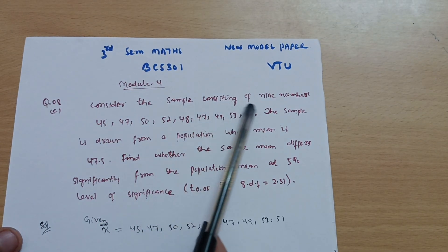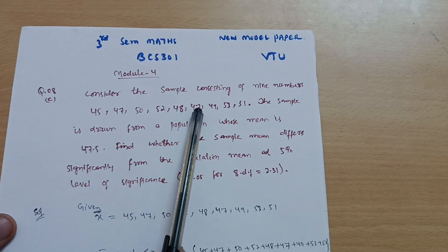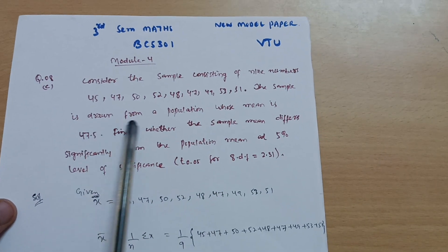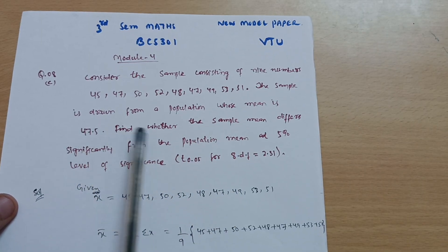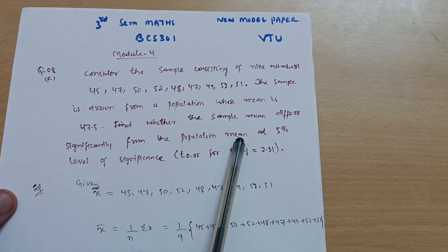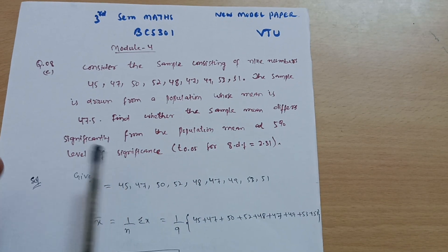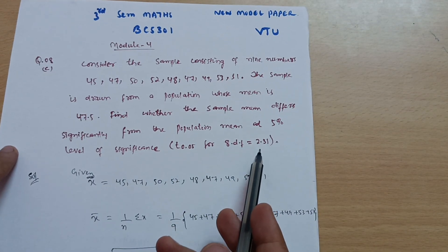Consider the sample consisting of 9 numbers: 45, 47, 50, 52, 48, 47, 49, 53, and 51. The sample is drawn from a population whose mean is 47.5. Find whether the sample mean differs significantly from the population mean at 5% level of significance. So T at 5% level is given, that is 2.31. So we have to check the hypothesis.